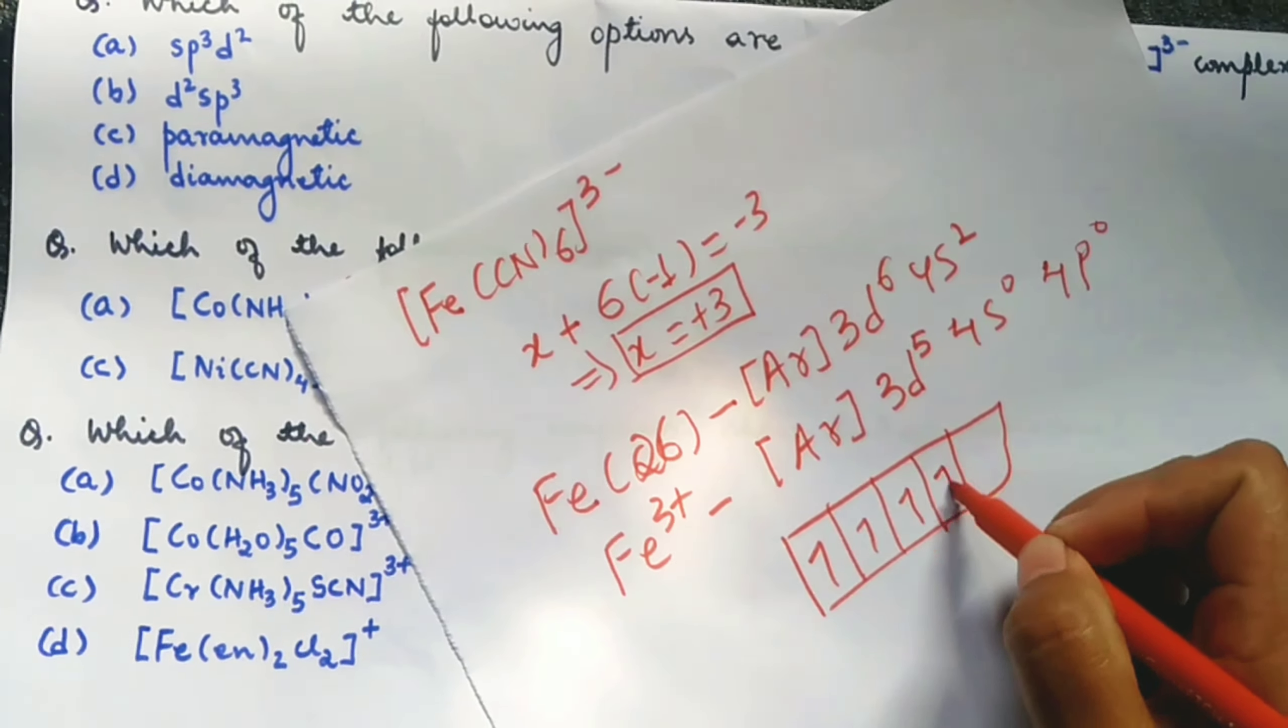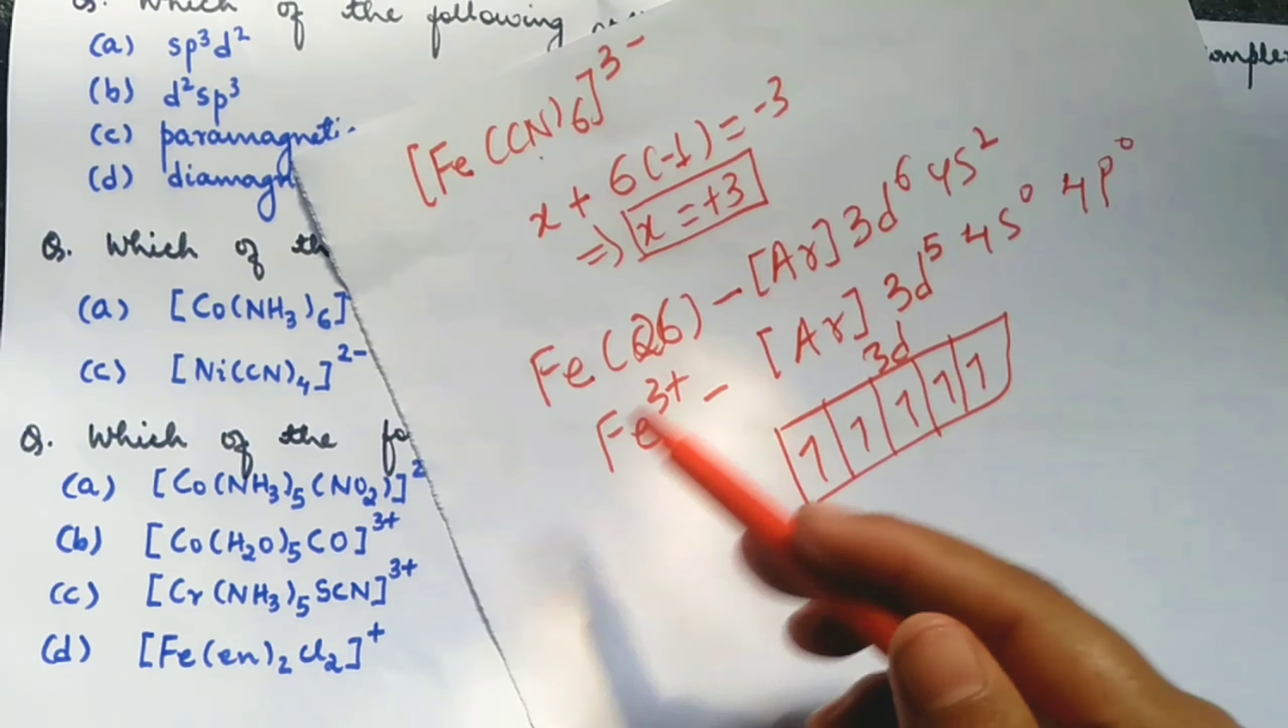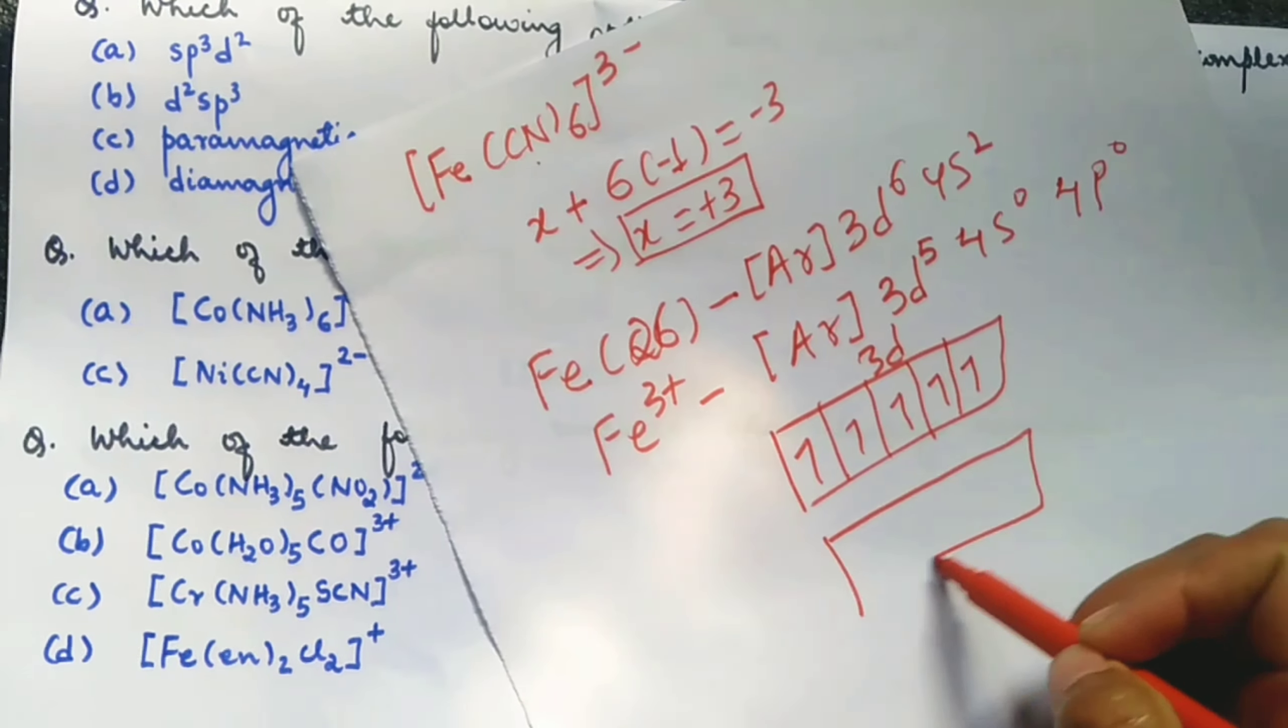1, 2, 3, 4, 5 in the 3d. Clear. This is a strong ligand, so electrons pair up.